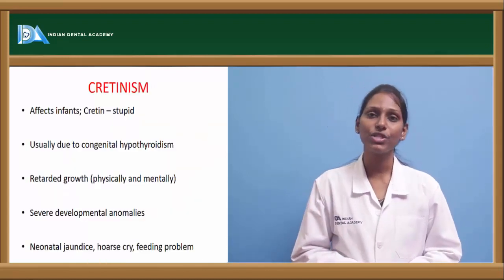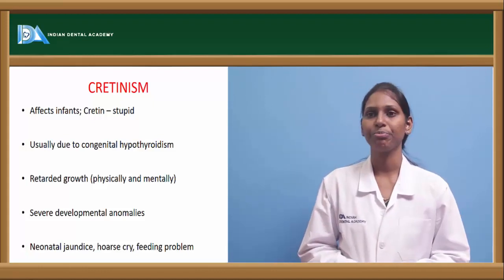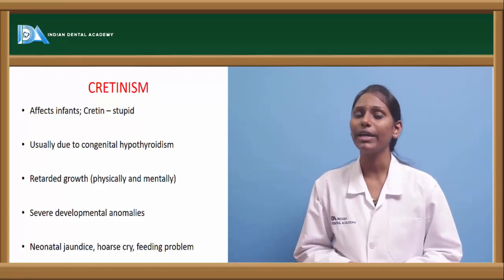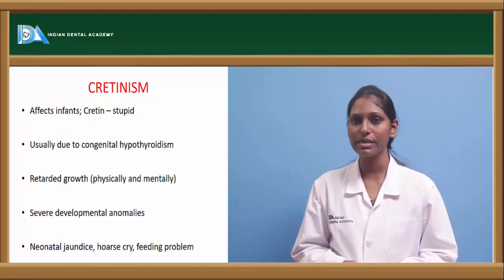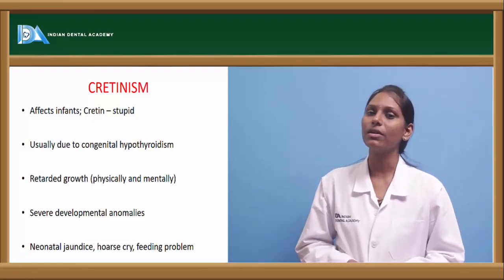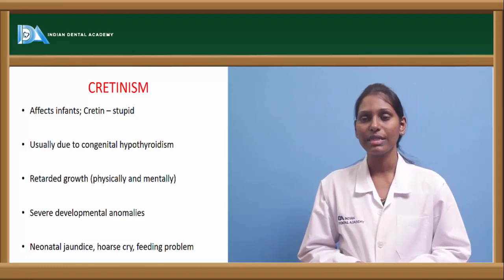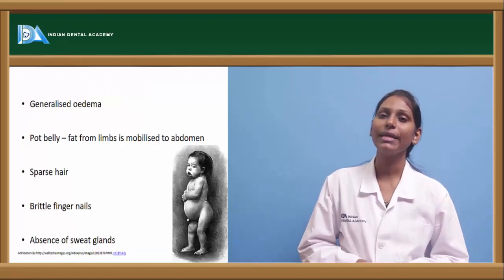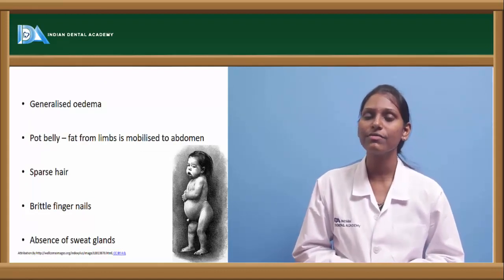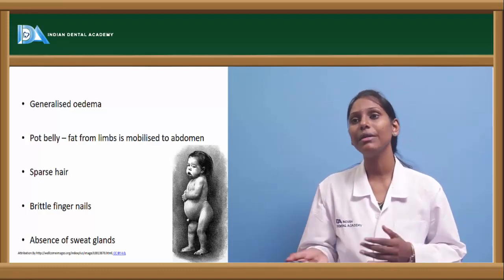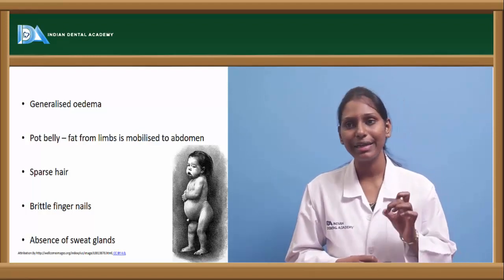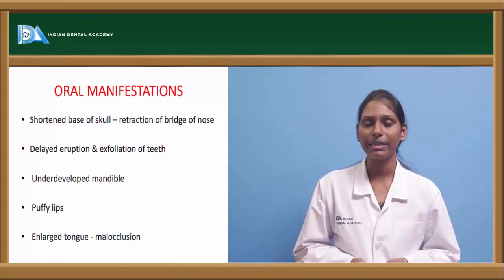Hypothyroidism in children is called cretinism. These children have low IQ and retarded growth both mentally and physically. It is usually due to congenital hypothyroidism with associated developmental abnormalities including neonatal jaundice, hoarse cry, and feeding problems. Generalized edema, protruding abdomen (cod belly) due to centripetal distribution of fat, sparse hair, brittle fingernails, and absence of sweat glands are common clinical manifestations.